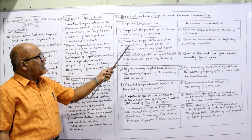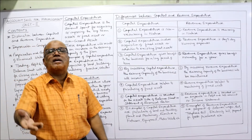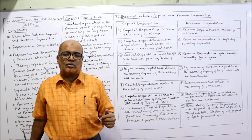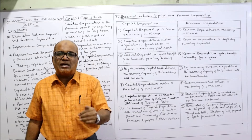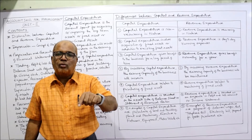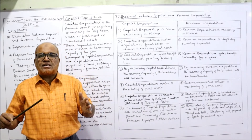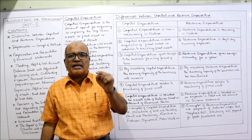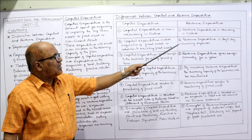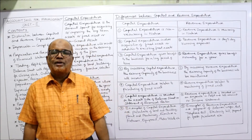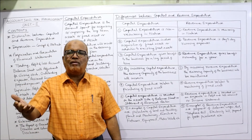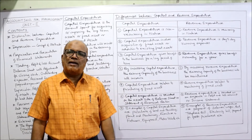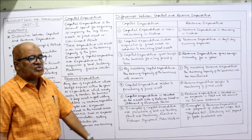Second difference: capital expenditure involves acquisition of fixed assets or addition to existing fixed assets — any amount spent on purchasing or adding value to existing fixed assets is capital expenditure. Revenue expenditure is the day-to-day running expenditure — continuously and repetitively incurred every month, week, or periodically to keep the business operating.